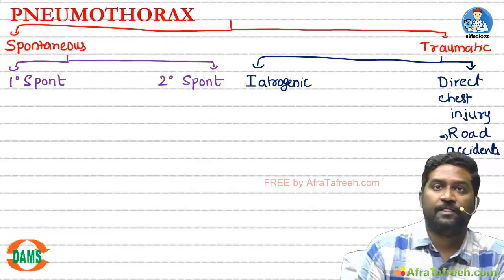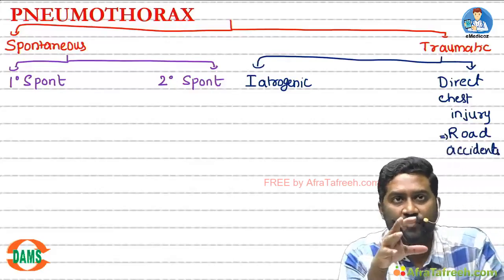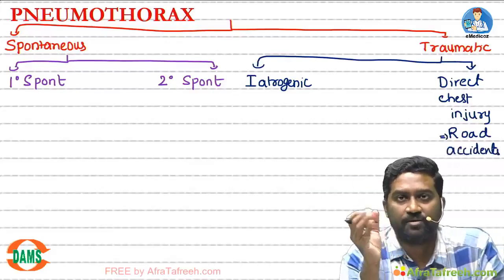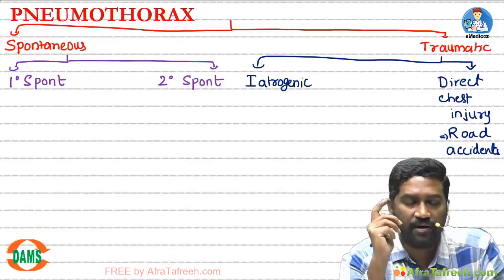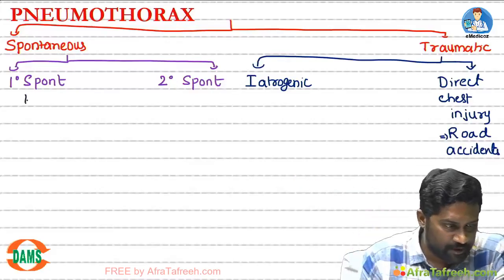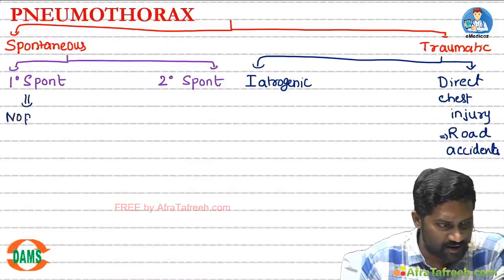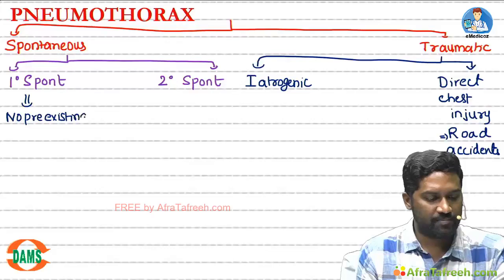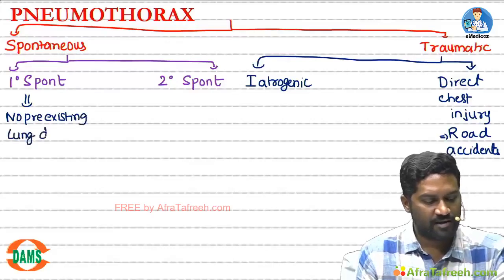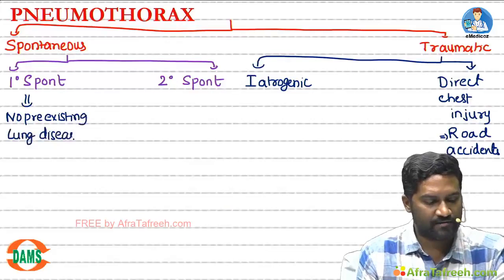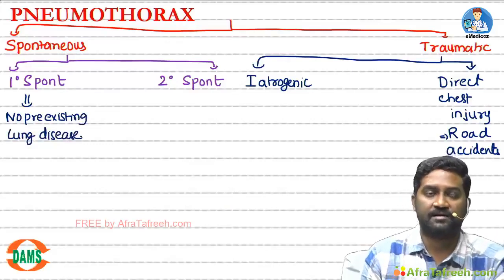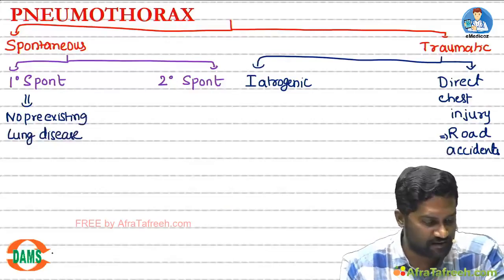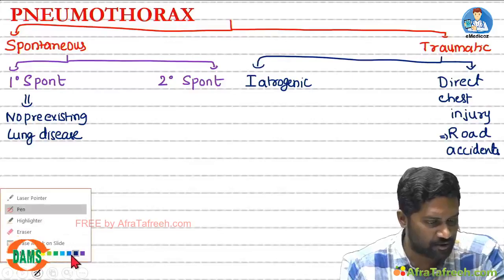Now let us see the medical causes: primary spontaneous, secondary spontaneous, and iatrogenic. In primary spontaneous pneumothorax, the patient will not be having any pre-existing lung disease, but still develops pneumothorax. The exact mechanism is not known.